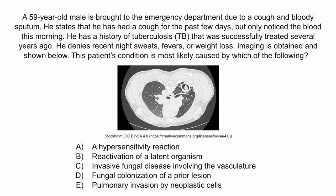Now let's review with a question. A 59-year-old male is brought to the emergency department with a cough and bloody sputum. He has had a cough for the past few days but only noticed the blood this morning. He has a history of tuberculosis that was successfully treated several years ago. He denies recent night sweats, fevers, or weight loss. Imaging is obtained and shown below. This patient's condition is most likely caused by which of the following: A) a hypersensitivity reaction; B) reactivation of a latent organism; C) invasive fungal disease involving the vasculature; D) fungal colonization of a prior lesion; or E) pulmonary invasion by neoplastic cells? The correct answer is D — fungal colonization of a prior lesion, describing an aspergilloma. His imaging has shown an aspergilloma.